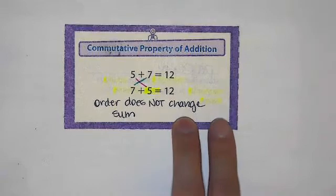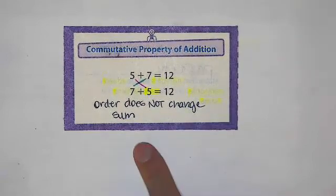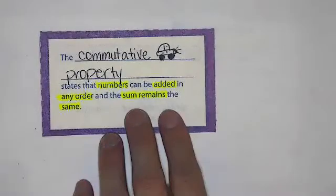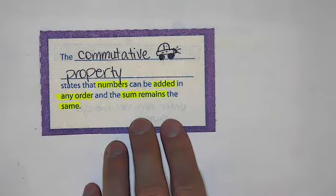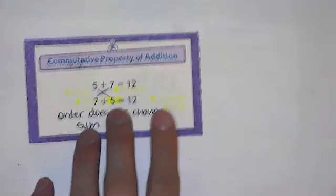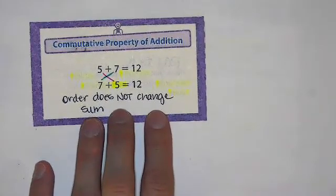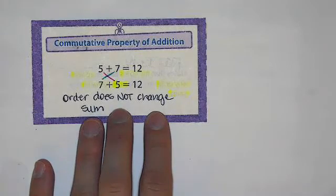Quickly we'll discuss some of those properties. This is the commutative property where it says you can flip around. It says numbers can be added in any order and the sum remains the same. I put a little car there to show a commute showing that you could do 5 plus 7 or 7 plus 5. It doesn't matter which order you put those numbers. When you add them together, the answer or the sum does not change.